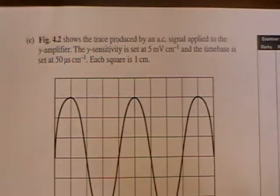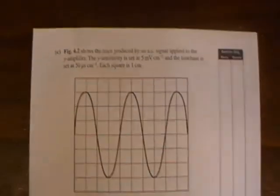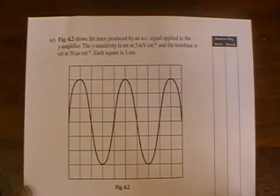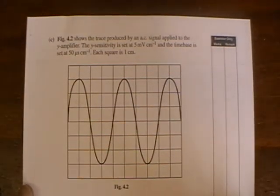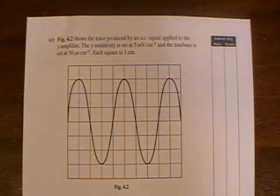Part C. Figure 4.2 shows the trace produced by an AC signal applied to the Y amplifier. The Y sensitivity is set at 5 millivolts per centimeter and the time base is set at 50 microseconds per centimeter. Each square is 1 centimeter.